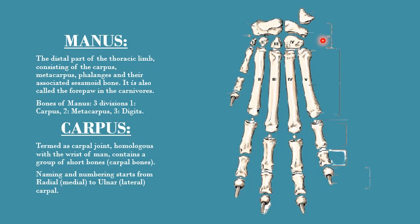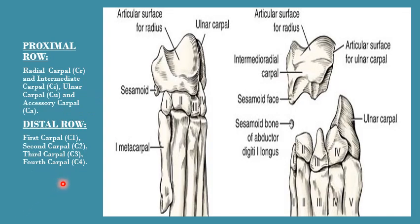In the case of dog, the carpal bones which collectively form the carpus are arranged in two rows: one is the proximal row and the second is the distal row. If we want to number these carpal bones, we start the numbering from the medial aspect to the lateral aspect. In the proximal row there are total three carpal bones.